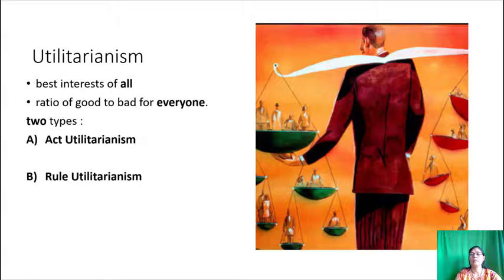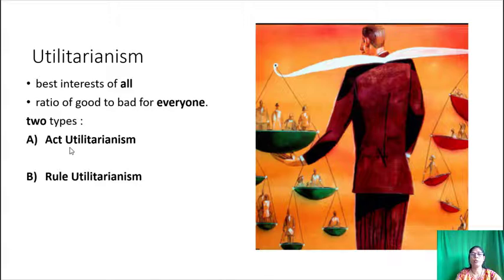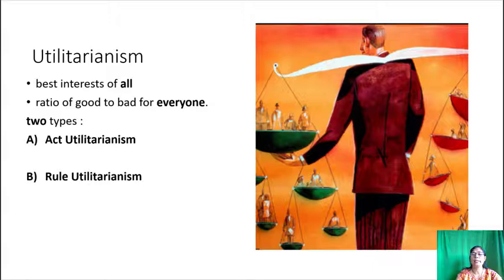Utilitarianism emphasizes the best interest of all concerned. It recommends an act that produces the greatest ratio of good to bad for everyone. There are two types: act utilitarianism, where the consequences for everyone resulting from alternative courses of action must be considered; and rule utilitarianism, where if keeping a rule produces more good than breaking it, we should keep the rule.